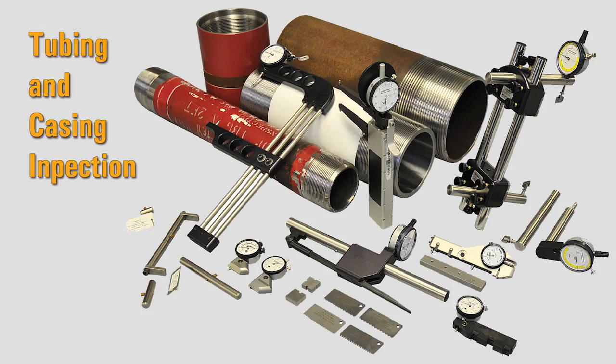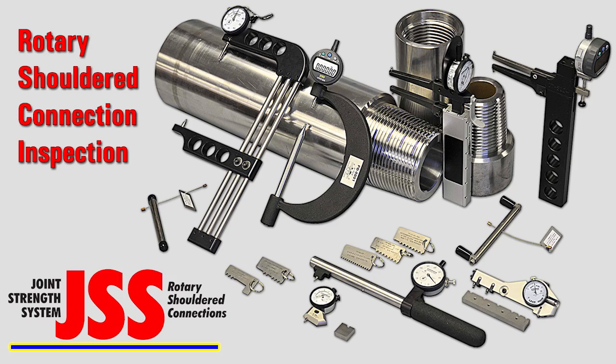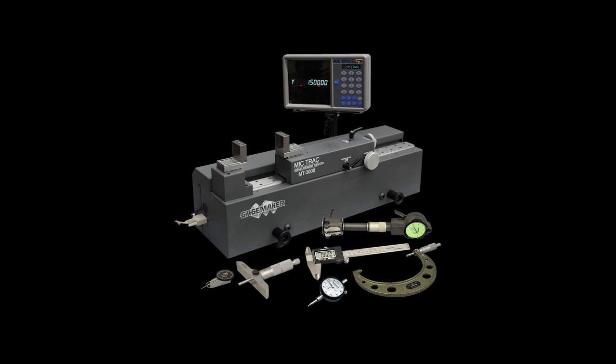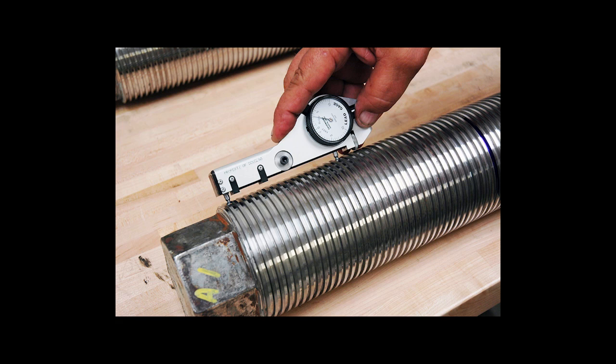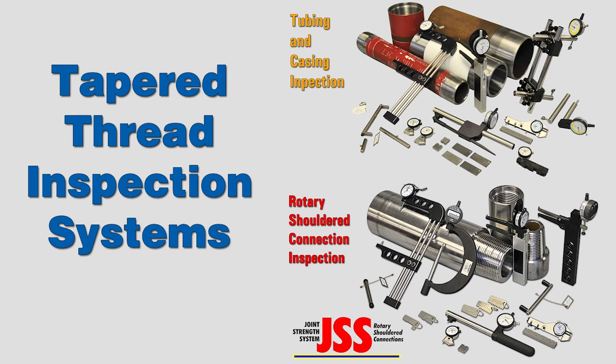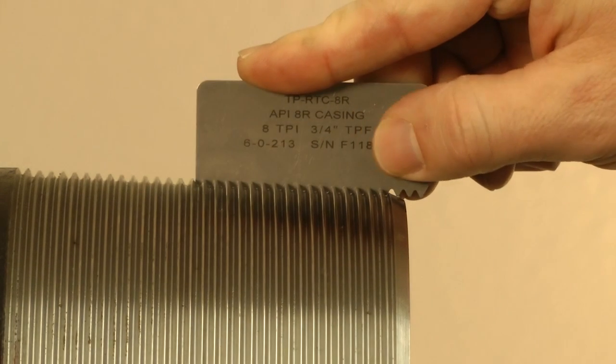From straight threads to tapered threads, to API and premium connections, to thread engineering software and calibration equipment, GaugeMaker products are used in countless facilities around the world. Our tapered thread inspection systems take the guesswork out of inspecting threaded tubular products.